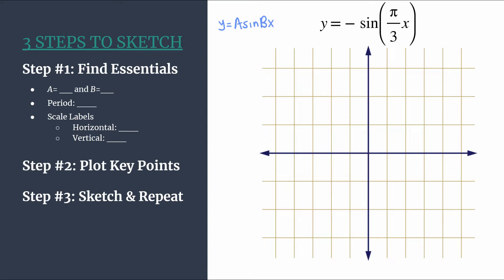Start by identifying a and b. So you see a is an understood negative one. Important things here: we know that the amplitude is just the absolute value of a. So the amplitude is just that distance from midline to maximum, or midline to minimum. Of course, a distance can't be negative. That's why we take the absolute value. But I like to go ahead and put a little star here, circle, do something to mark it.